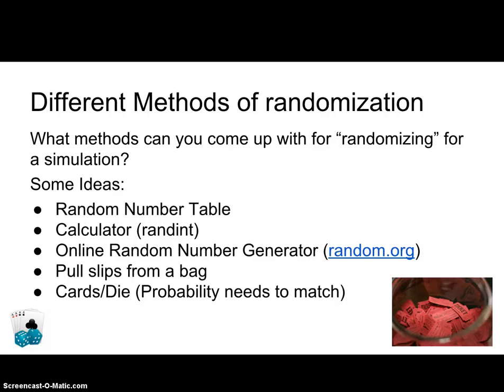Another pretty simple way is to pull slips from a bag — like if you were doing a raffle. You get raffle tickets, put them in a hat or bowl, shake it all around to get some variation in there, then grab one out blindfolded. That's pretty random. There are some things that could cause bias — maybe the tickets get stuck together or somebody didn't separate them properly.